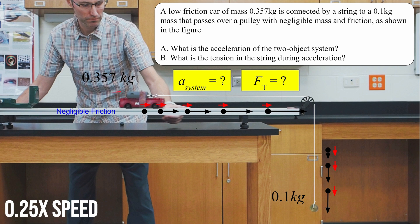We're going to use the known masses of the cars — the low friction car has a mass of about 0.357 kilograms and the hanging mass has a mass of about 0.1 kilograms — to predict what the acceleration and tension should be theoretically. We have a motion detector measuring how the velocity of our system is changing, and a wireless force sensor connected to our string, which is directly measuring the tension in the string.